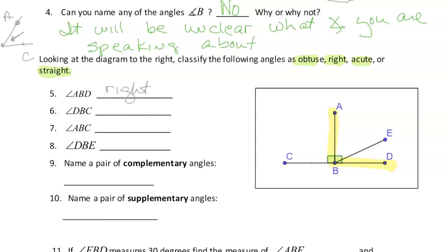DBC is this entire piece, and that entire piece is going to be a straight angle — so it's 180 degrees. So I have a 90 degree and a 180 degree angle identified.